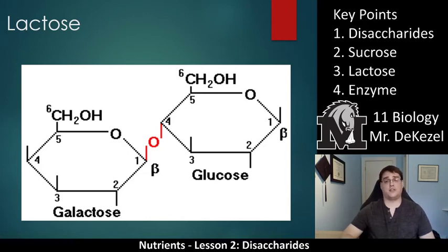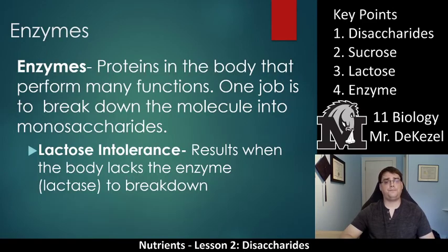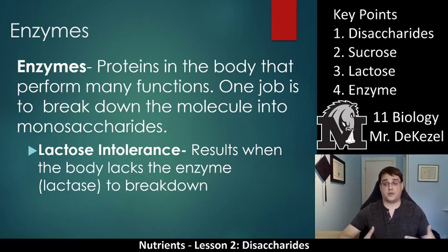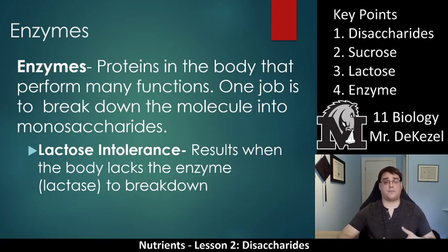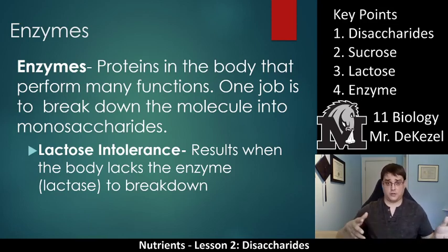You should have these diagrams in your notes to refer to easily. One last thing is enzymes — proteins in the body that perform a whole bunch of functions. One job is to break down molecules into monosaccharides: when enzymes encounter a disaccharide, they break it into monosaccharides so it can be used. When you do not have a particular enzyme, you can develop lactose intolerance. Lactose intolerance results when the body lacks the enzyme lactase. The naming rule is: change the ending from '-ose' to '-ase' to get the enzyme — so lactase breaks down lactose, and sucrase would break down sucrose.